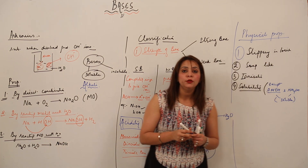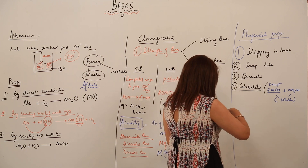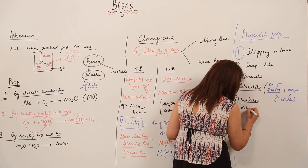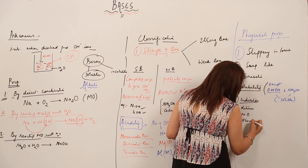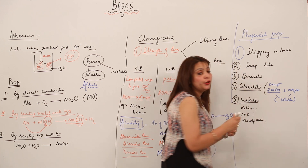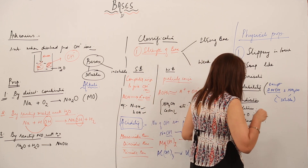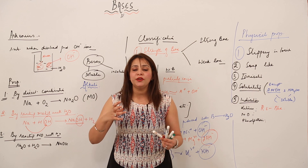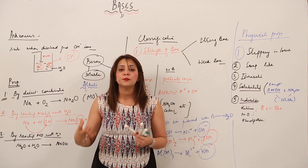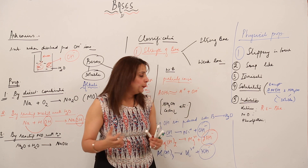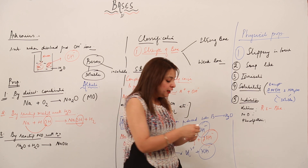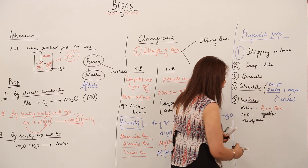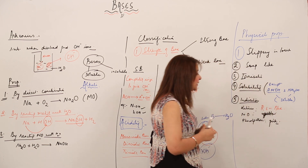Now the action on indicators: when we talk about litmus, methyl orange, and phenolphthalein — bases turn red litmus blue. With acids, blue litmus turns red, but with bases, red litmus turns blue. Methyl orange, which is originally orange in color, turns yellow when treated with a base.